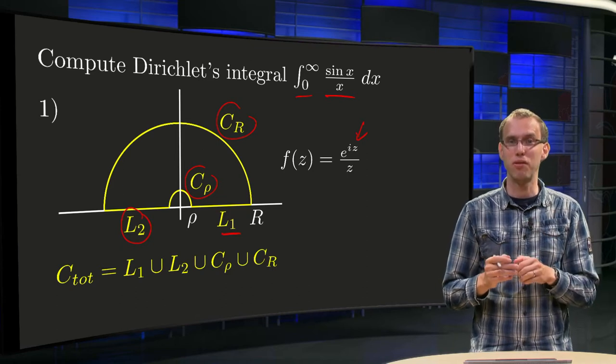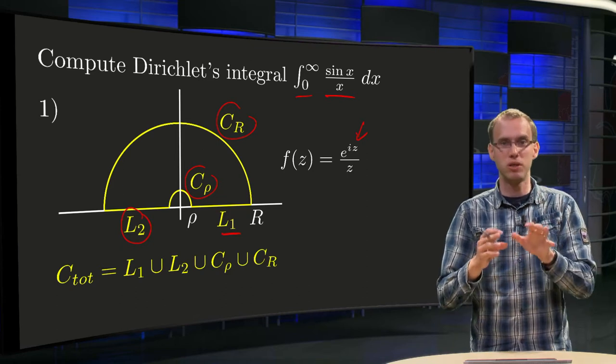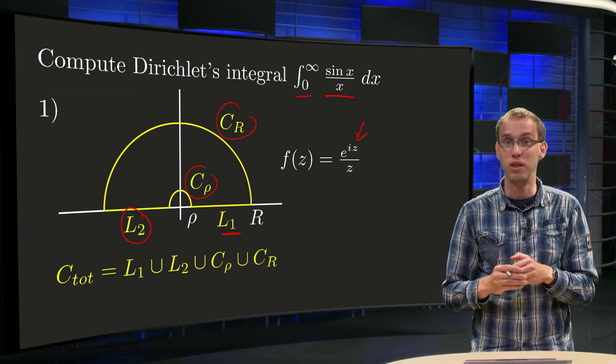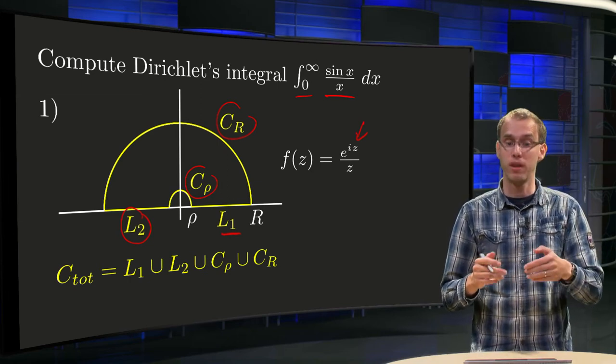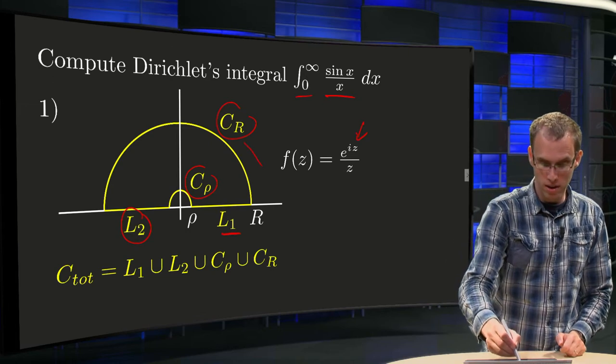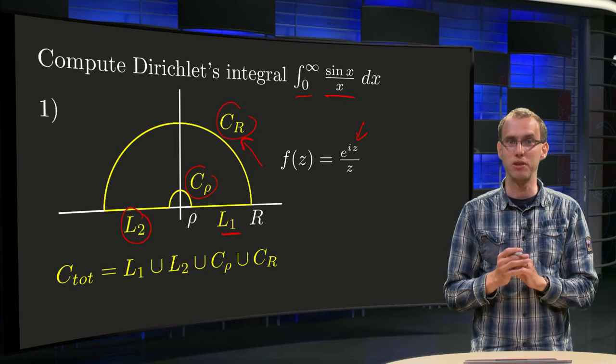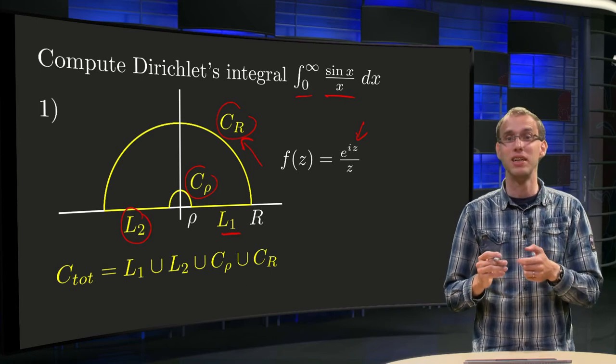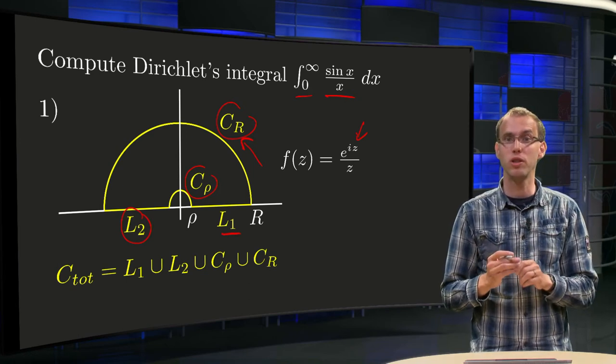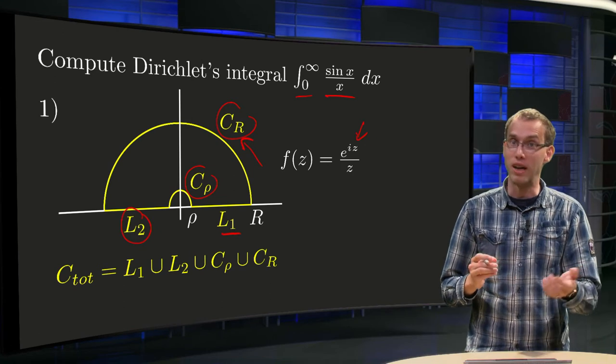Why do we choose this f(z)? Well, we cannot include sine of z in our function because sine of z is going to blow up on our big arc, so we cannot do sine of z. We have to do something else. e to the power iz will be fine. We will be able to use Jordan's lemma later on, but e to the power iz is not sine z.